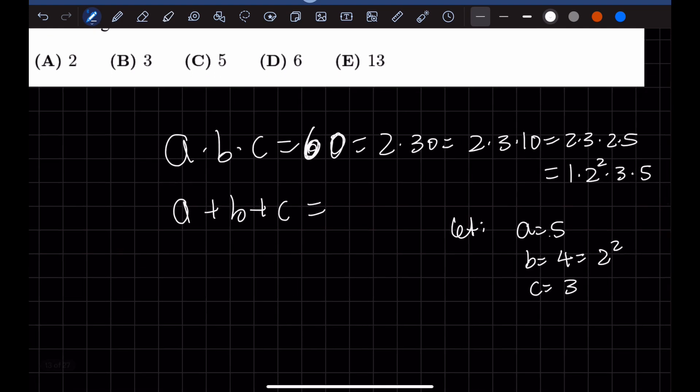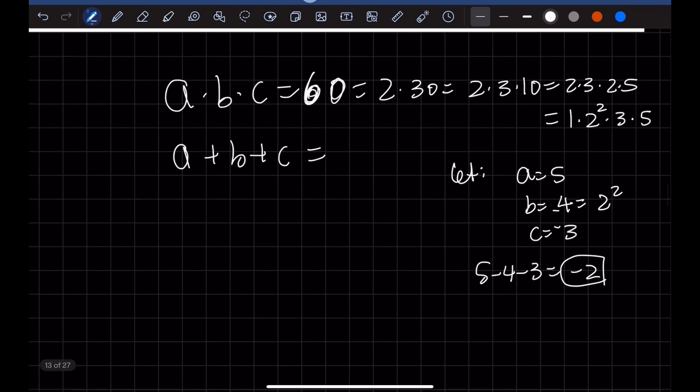If we set these two to be negative, 5 minus 4 minus 3, this is negative 2. So that's not good. We have to get a positive number. So this combination probably does not work.